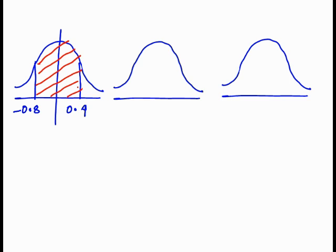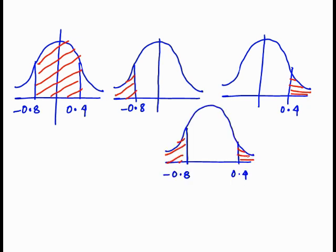In the question itself we have the probability value less than minus 0.8 and the value of probability greater than 0.4. We exactly require the middle area of this. So if we subtract these values from 1, we get exactly what we require.